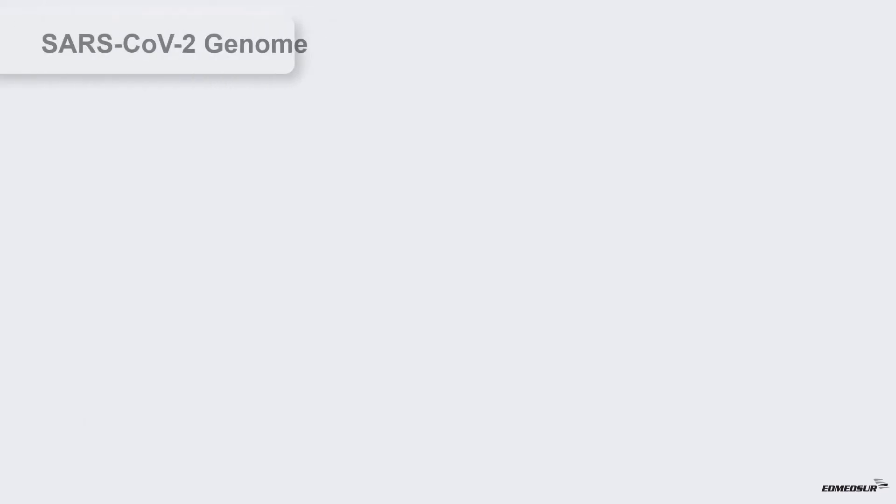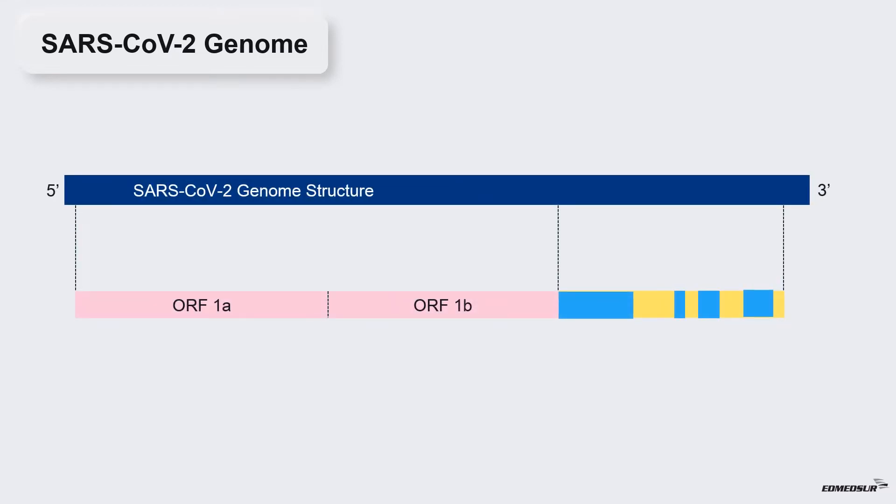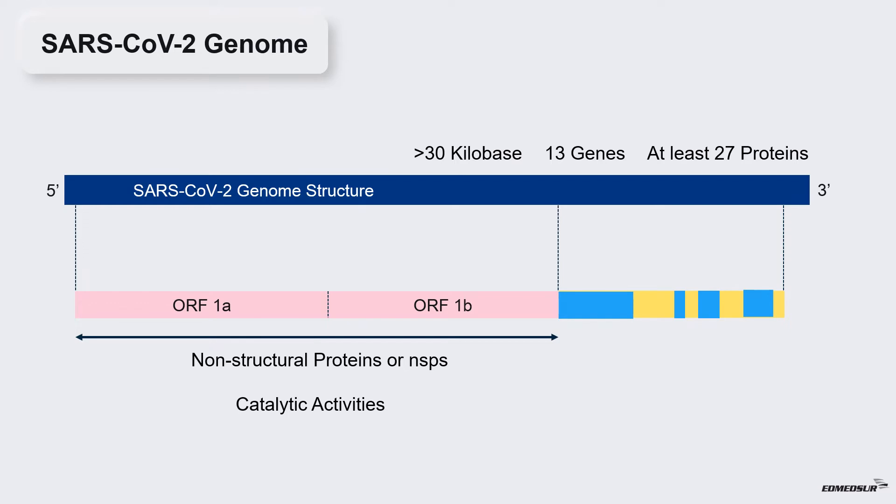SARS-CoV-2 genome. SARS-CoV-2 genome is a single stretch of RNA that is more than 30 kilobases long. It encodes about 13 different genes and from these 13 genes at least 27 proteins are made. It generates several non-structural proteins or NSPs. These NSPs have catalytic activities that are critical at different stages of viral life cycle.